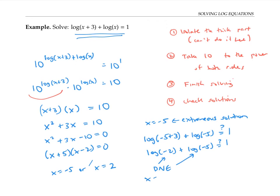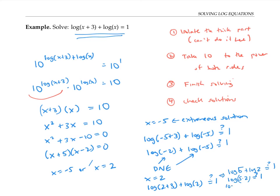Let's check the other solution, x equals two. We're checking to see if log of two plus three plus log of two is equal to one. Since there's no problem with taking logs of negative numbers or zero here, this should work out fine. This is log of five plus log of two, and we want that to equal one. The sum of two logs is the log of the product, so log of five times two, we want that to equal one. And that's just log base 10 of 10, which definitely equals one — because log base 10 of 10 asks what power do I raise 10 to to get 10, and that power is one. So the second solution x equals two does check out, and that's our final answer.